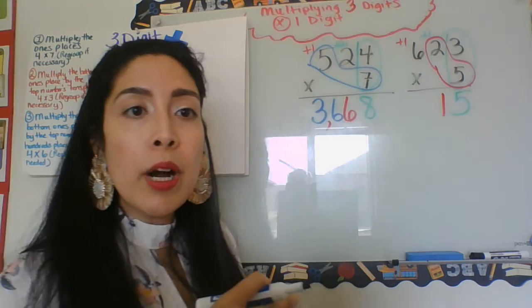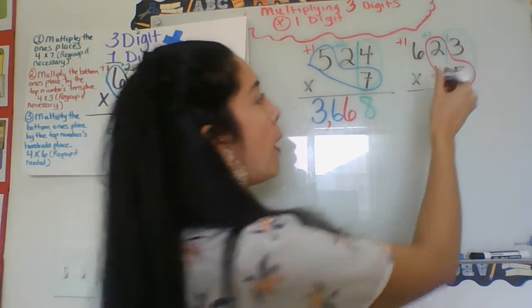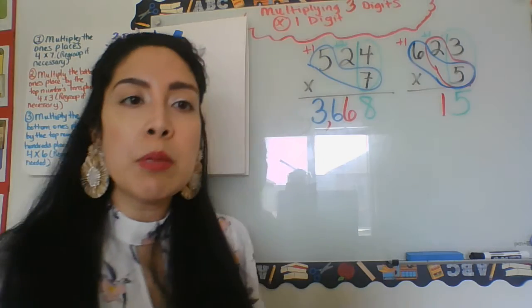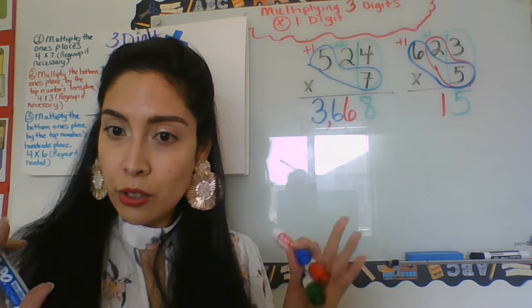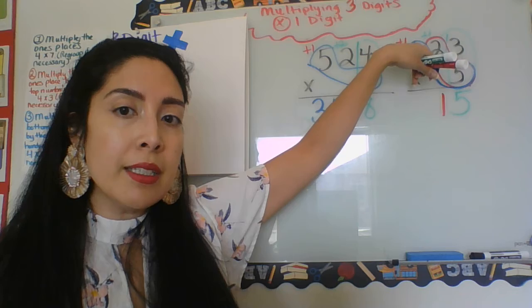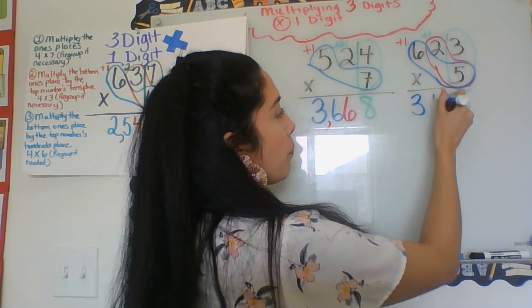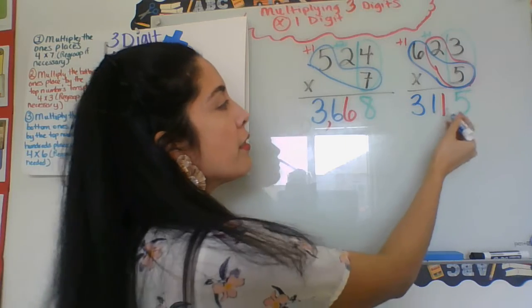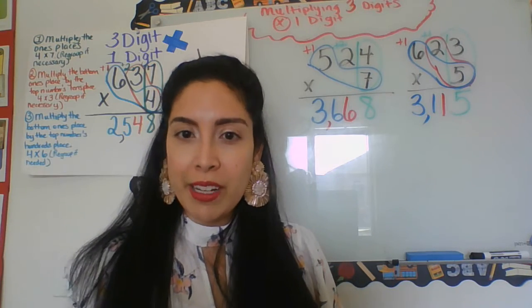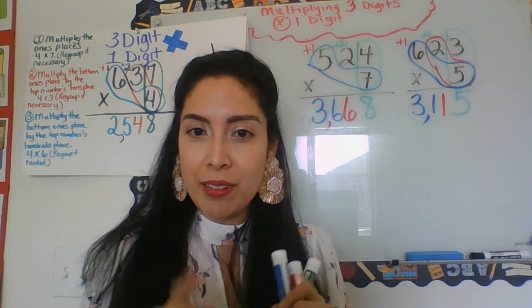Okay, continuing on with the different colors so you can see, now it is the bottom ones times the top hundreds, so everybody, right? So it's the bottom to the other side. Six times five is 30. Plus, don't forget about the one that we regroup. 30 plus one is, that's right, 31. One, two, three. My answer is 3115.